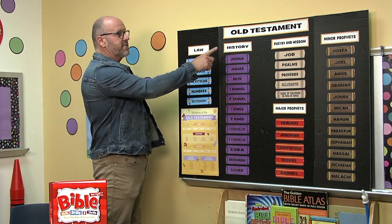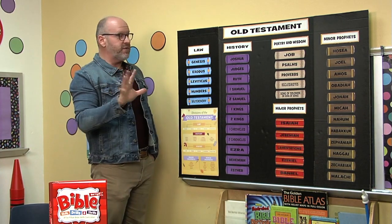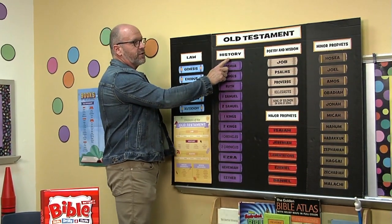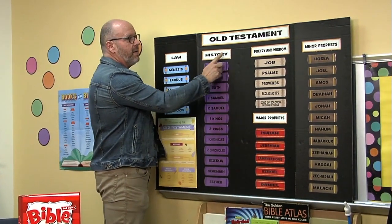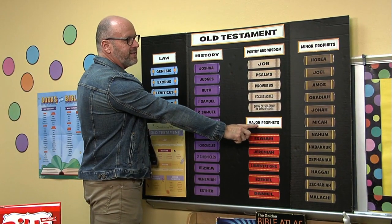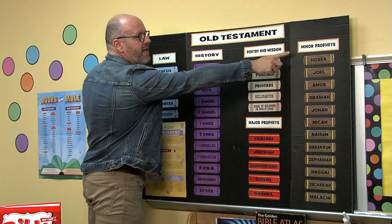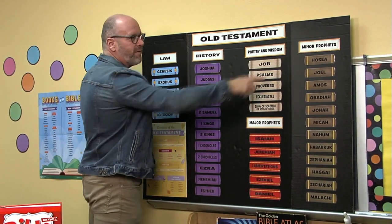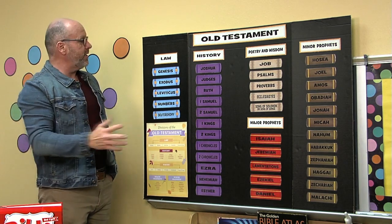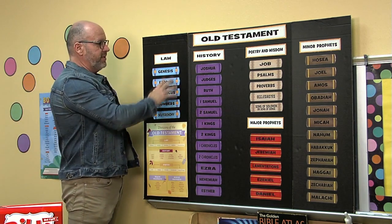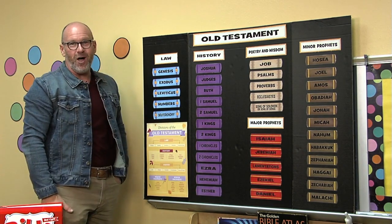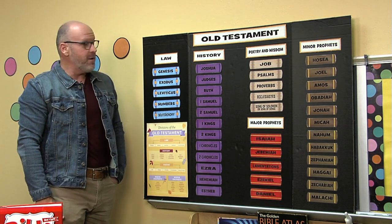In the Old Testament, the five divisions are law, history, poetry, major prophets, and minor prophets. We're going to start with just learning the first division, and that is the books of law written by Moses.